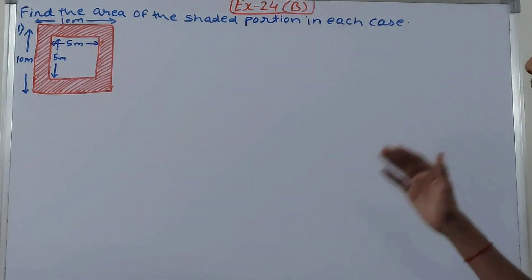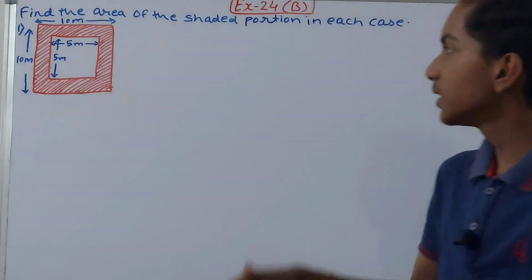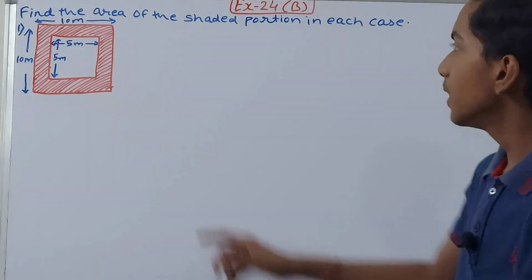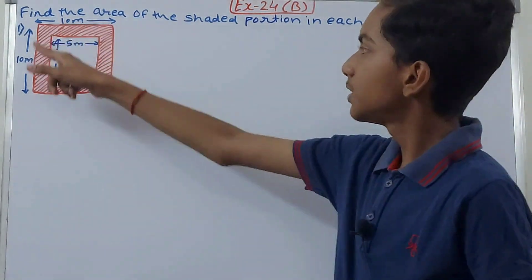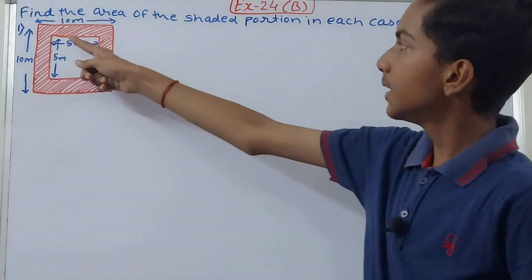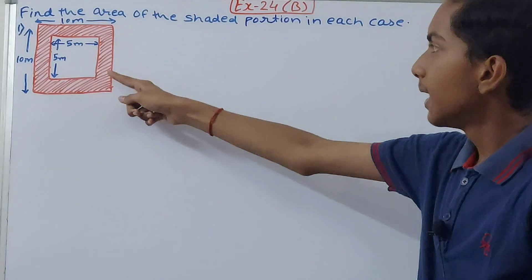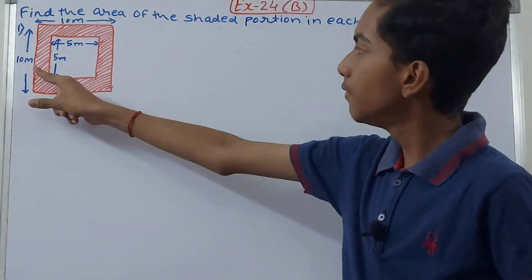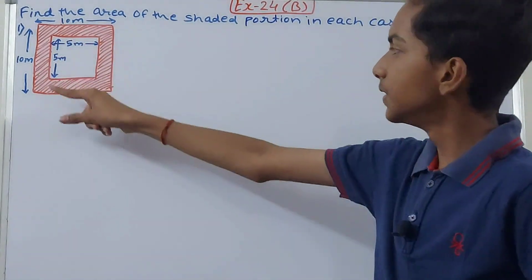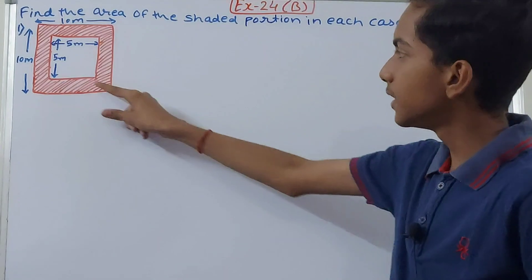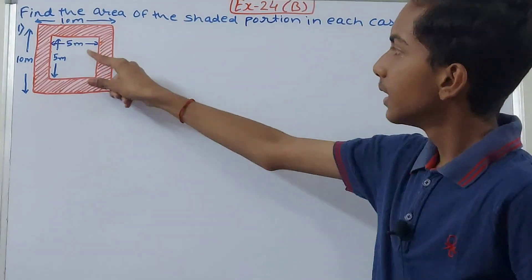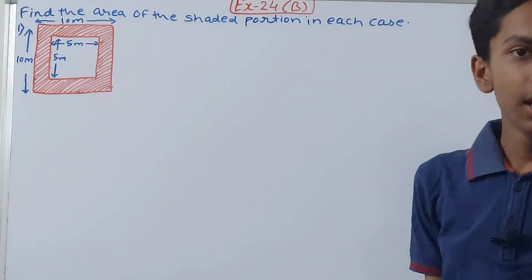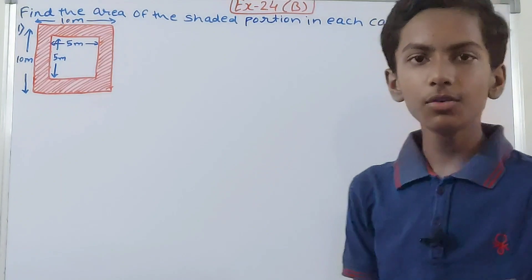First, you can see we have two squares — one is the outer square and the other one is inside it. The area which is shaded is between both of these squares, as you can see clearly. So we have to find this shaded area.